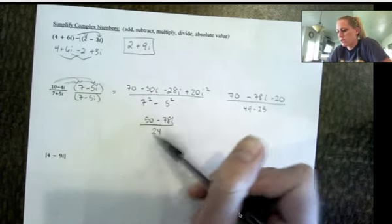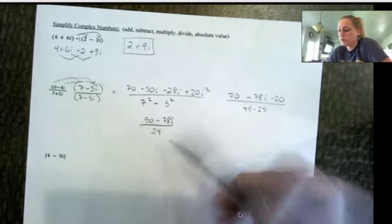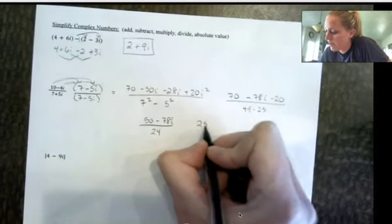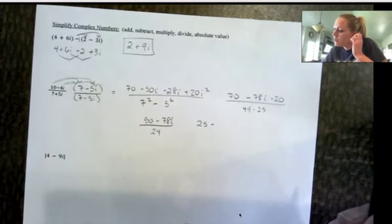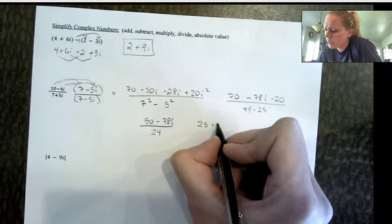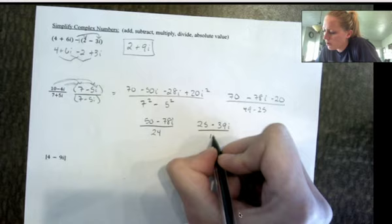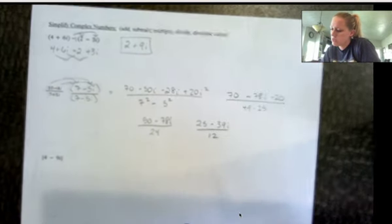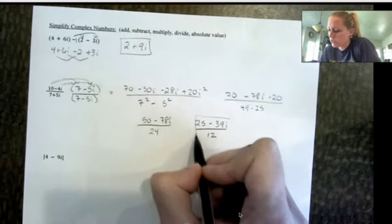And here I'm going to get 49 minus 25. So on top 70 minus 20 is 50 over 49 minus 25 is 24. I think I at least can divide all those by 2. So if I do that I get 25 minus let's see 78, 49, 39i over 12. And I think that is as far as I can go there.